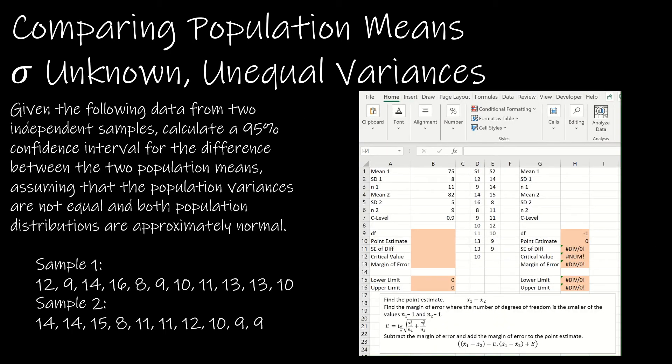I now want to take a look at Excel. On the left side of your screen, we're going to look at that question that we just looked at. I've already entered the first mean, the first standard deviation, the first sample size, the second mean, the second standard deviation, the second sample size, and the confidence level of 90%. So we're going to talk about how to find the degrees of freedom, the point estimate, et cetera.